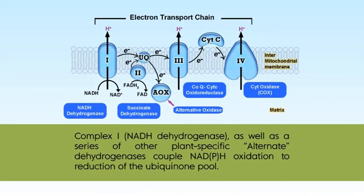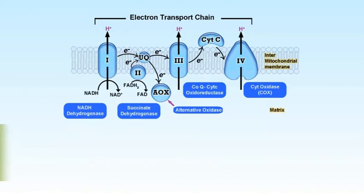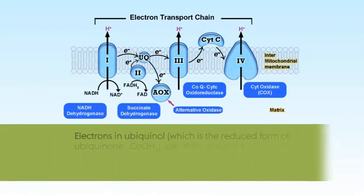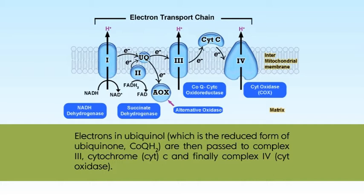Complex 1, which is NADH dehydrogenase, as well as a series of other plant-specific alternate dehydrogenases, couple NADH oxidation to reduction of the ubiquinone pool. Complex 2, which is the succinate dehydrogenase of the TCA cycle, is a further supply of electrons for the ubiquinone pool. Electrons in ubiquinol, which is the reduced form of ubiquinone or dihydroubiquinone, are then passed to Complex 3, cytochrome C, and finally to Complex 4, which is cytochrome oxidase.